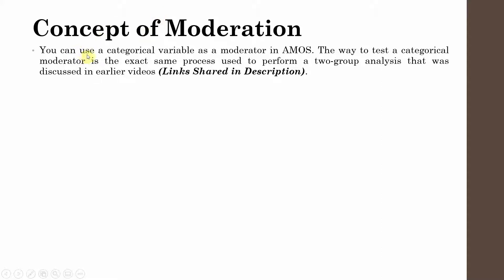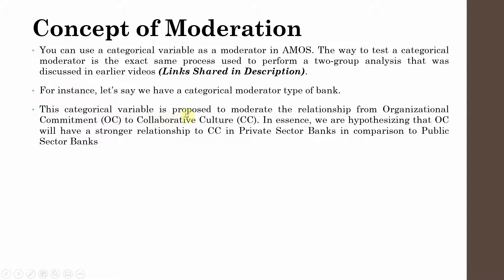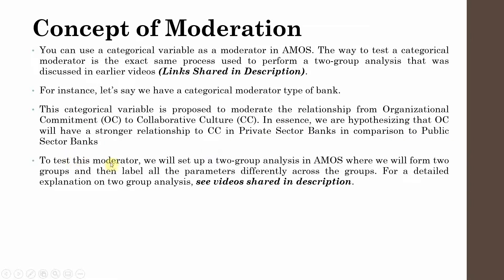The concept of moderation — you can use a categorical variable as a moderator in AMOS. The way to test a categorical moderator is exactly the same as we've done earlier in two-group analysis. For instance, let's say we have a categorical moderator that is type of bank — public bank or private bank. This categorical variable is proposed to moderate the relationship from organizational commitment to collaborative culture.